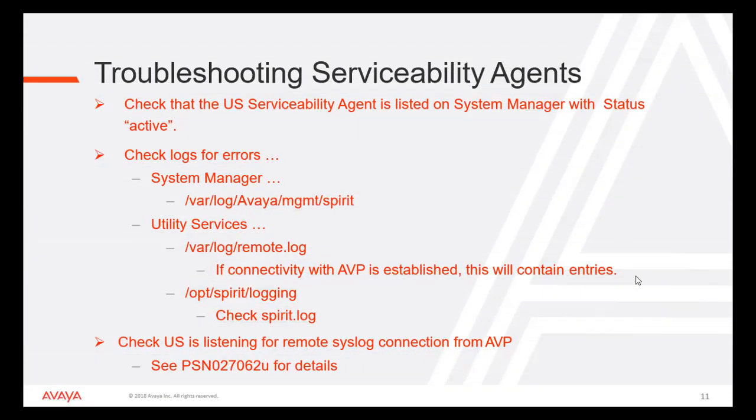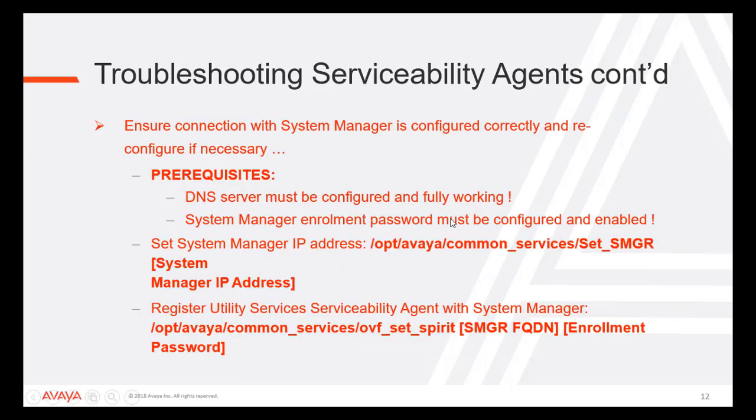Troubleshooting Serviceability Agents: Check that the Utility Server Serviceability Agent is listed on System Manager with status Active. Check logs for errors — on System Manager, refer to the Spirit folder at /var/log/avaya/mgmt/spirit. On Utility Services, refer to /var/log/remote.log, which will indicate if connectivity with AVP is established. Refer to spirit.log in /opt/spirit/logging. Check that Utility Server is listening to remote syslog connections from AVP. Refer to PSN 27062 for details. Ensure the connection with System Manager is configured correctly and reconfigure if necessary.